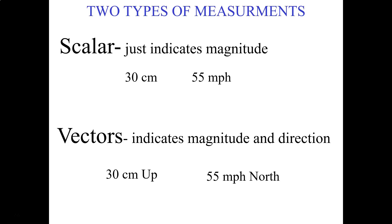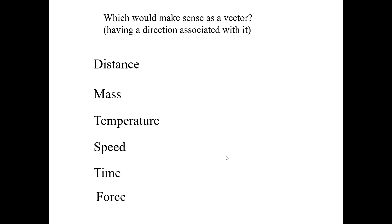If I walk 30 centimeters, that just tells me how far I walked — it doesn't tell me which way. That's a scalar. If I want to make it a vector, I have to include the direction, so I might say 30 centimeters up. If I'm driving 55 miles per hour, that's my speed — not a vector. But when I say 55 miles per hour north and give it a direction, it's a vector. The vector quantity of speed is called velocity.